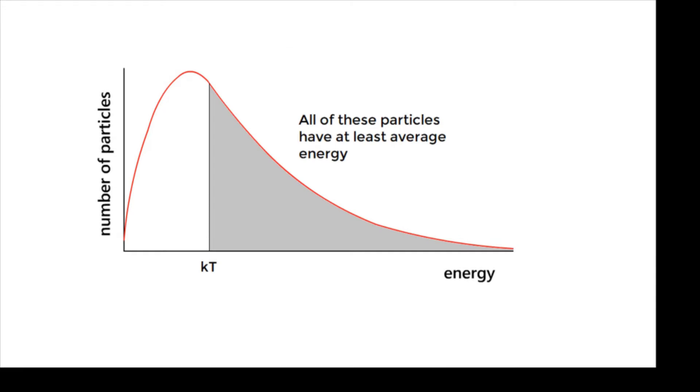If I add KT, now KT is the average energy, we saw that it's a way of estimating the average energy of a system. Then KT is actually after the peak because the area either side has to be the same. And all of the particles to the right of KT here, all of those particles have at least average energy. So the particles to the left have less than average, and the particles to the right have more than, or at least average energy. Some of them have an awful lot more.